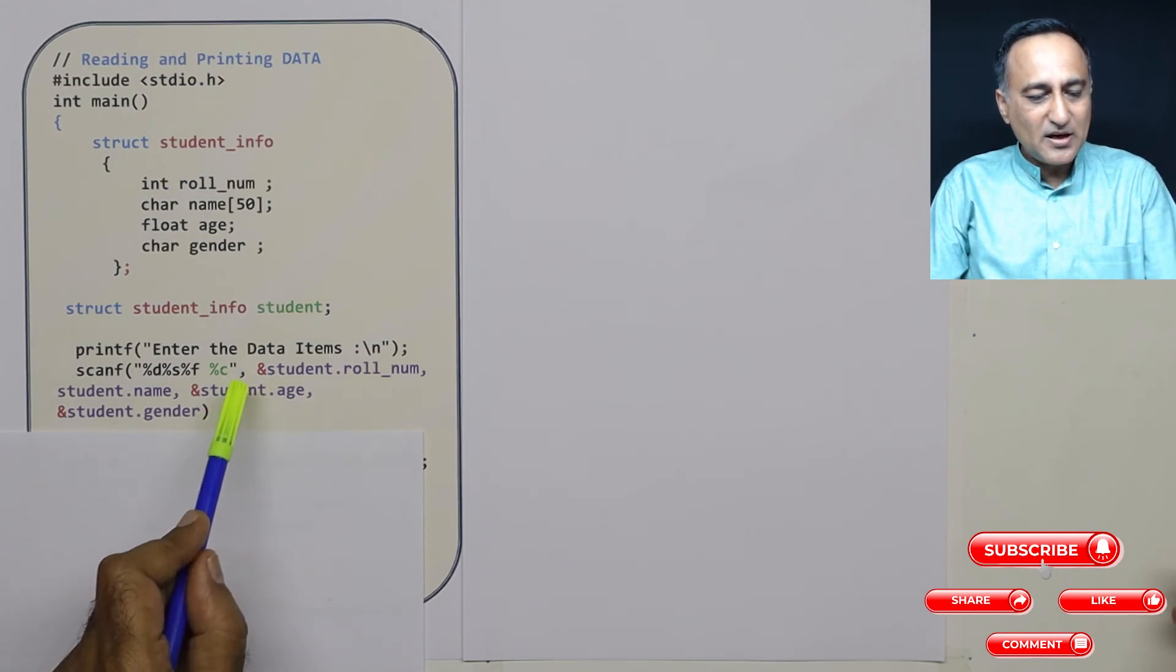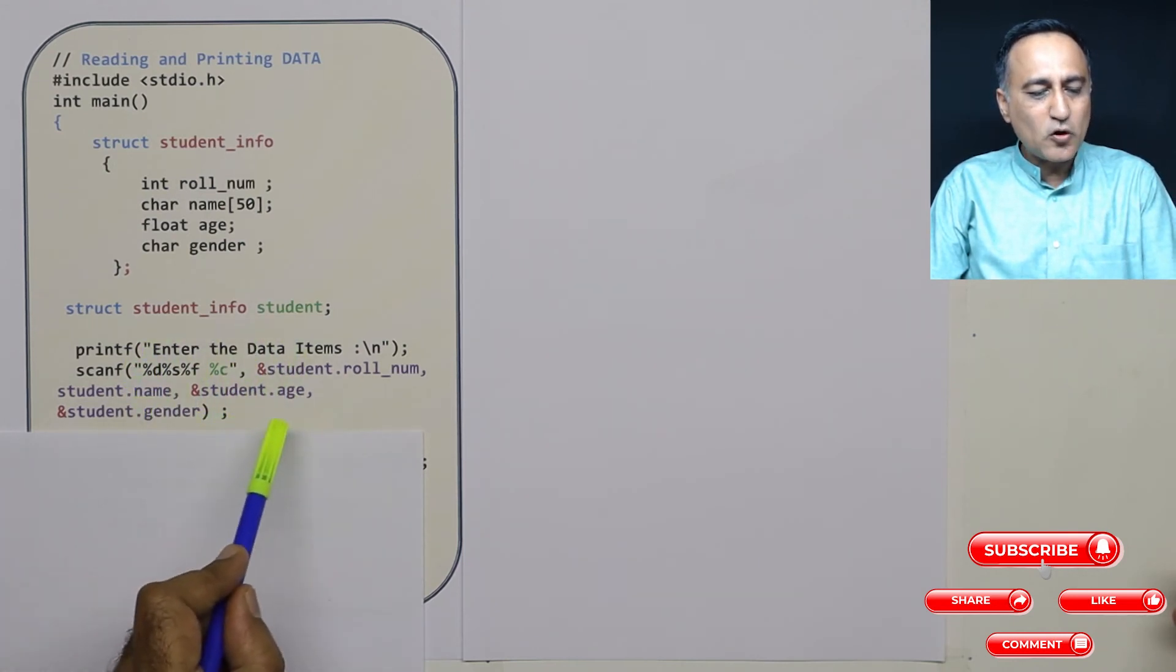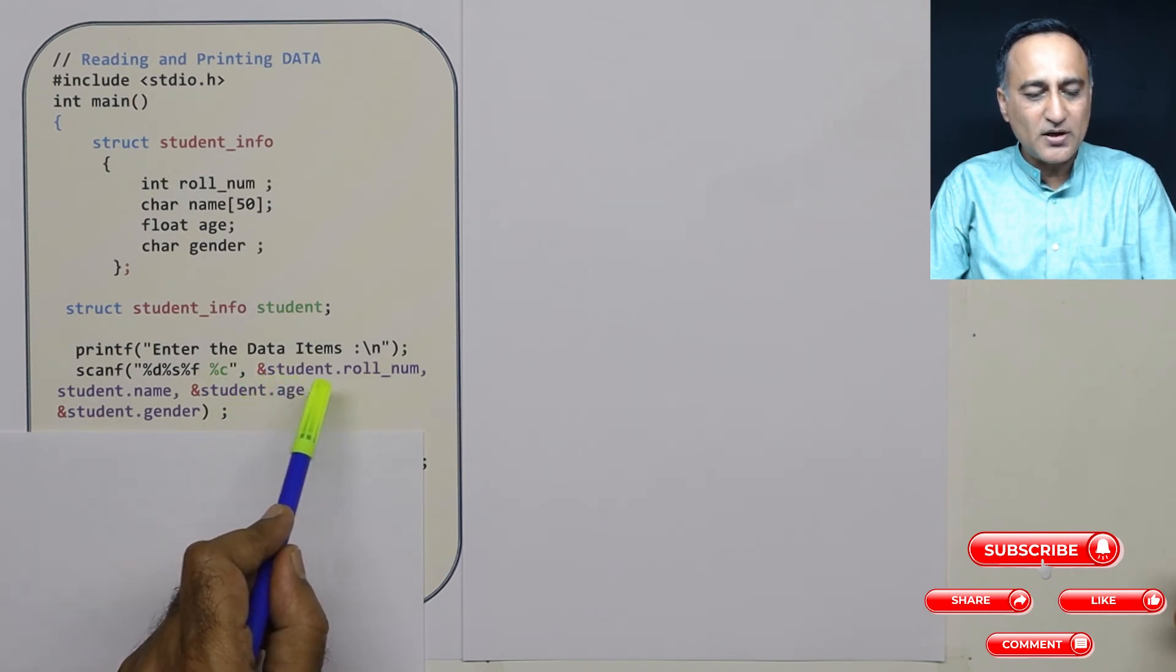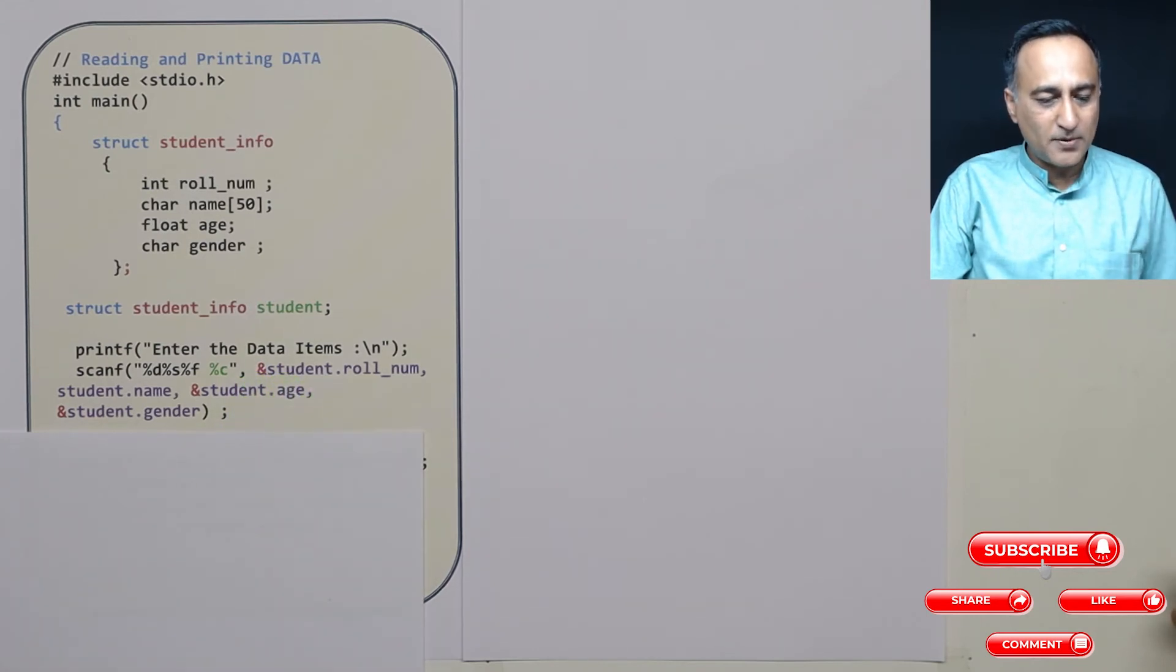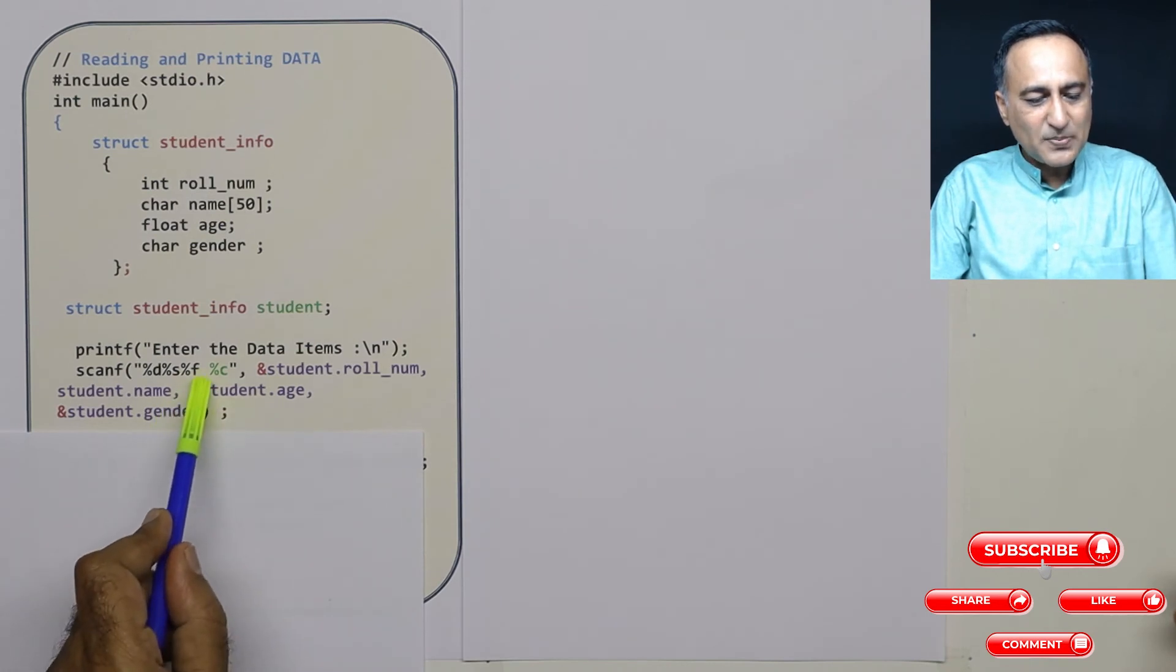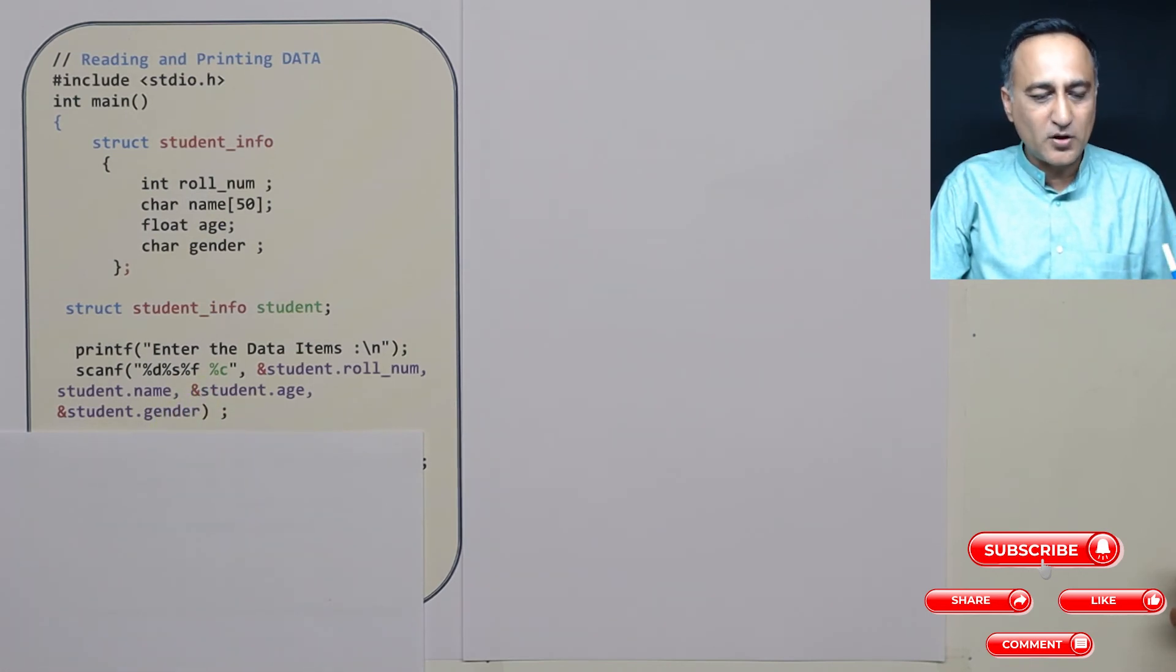The important part here is everything is same as you would normally read, except that you have to access through student dot to go to the roll number. The reason I have given a space here, let me give a very brief explanation for those of you who are curious.